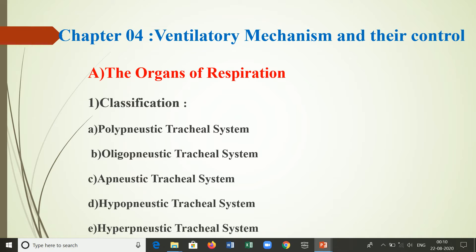Kaling proposed a scheme of classification of the tracheal system on the basis of functional spiracles. The first category is the polonistic type, which represents an open tracheal system and can be divided into three subtypes: holonistic, heministic, and perimenistic.